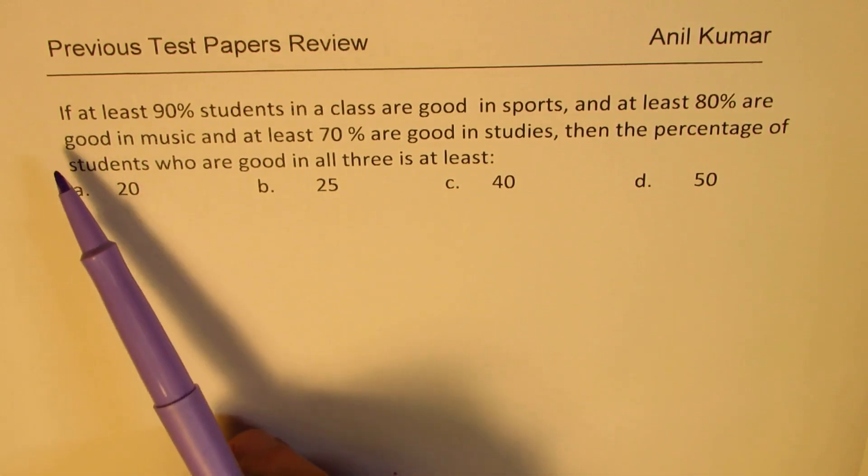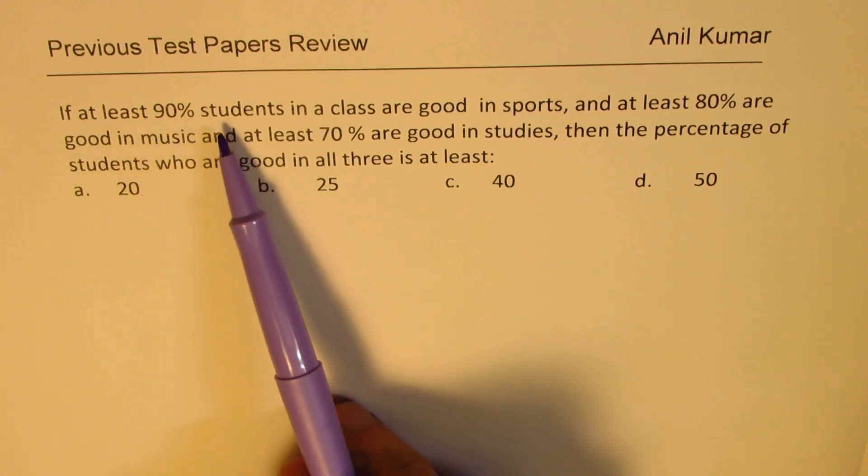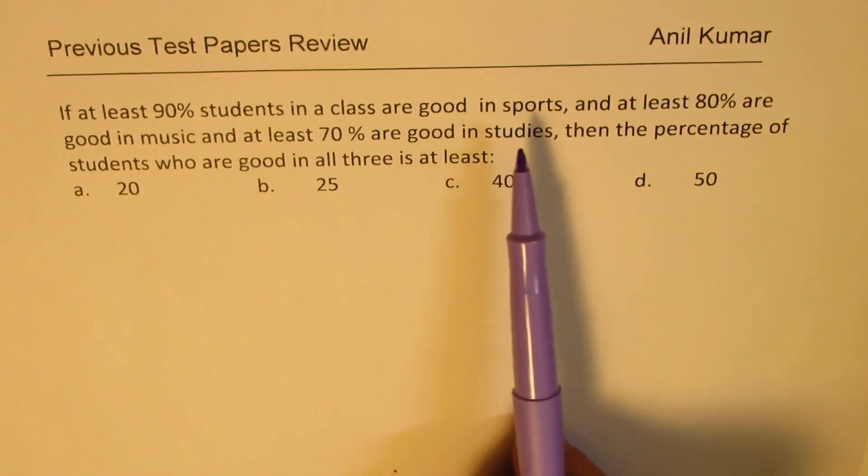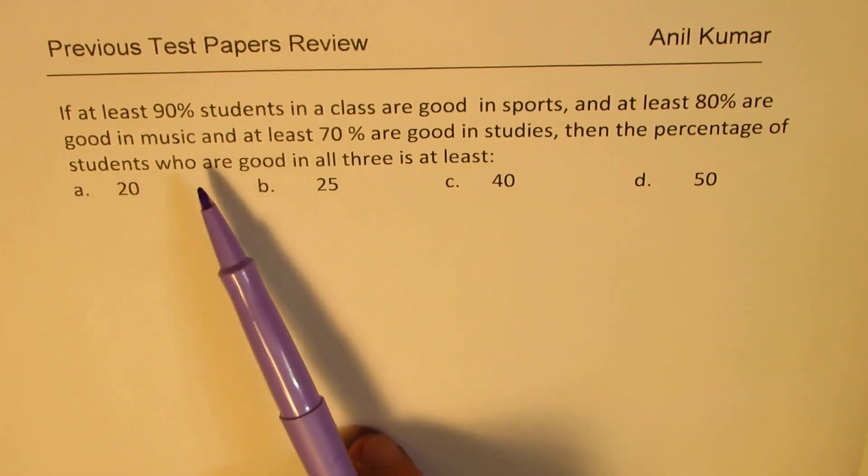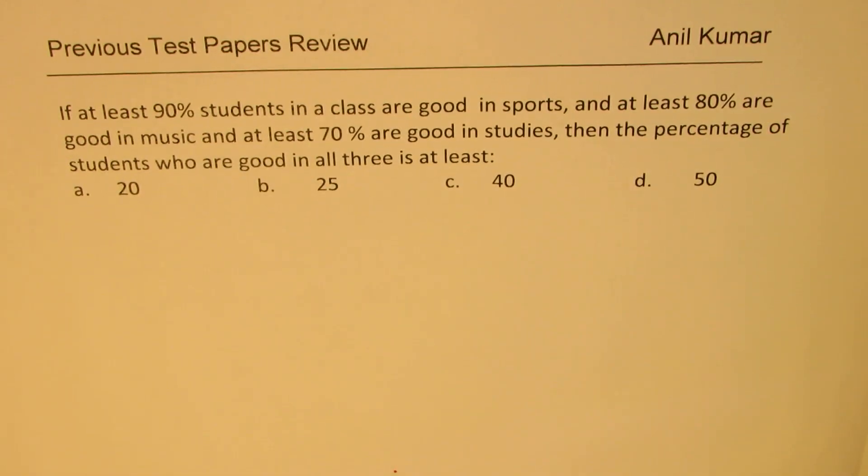The question here is, if at least 90% students in a class are good in sports and at least 80% are good in music and at least 70% are good in studies, then the percentage of students who are good in all three is at least what? So we're given four choices.